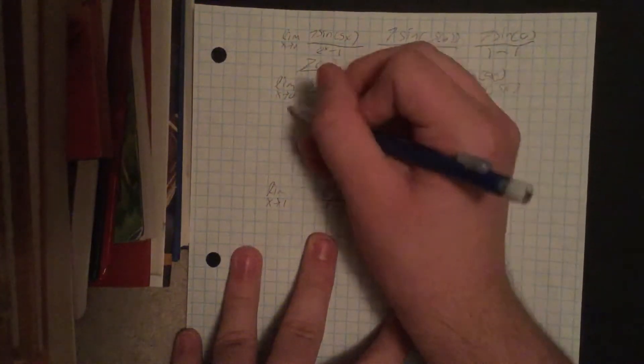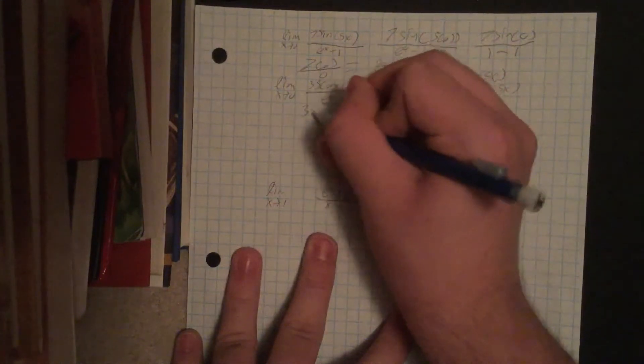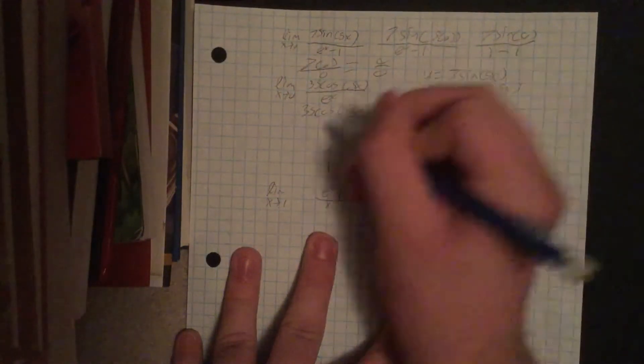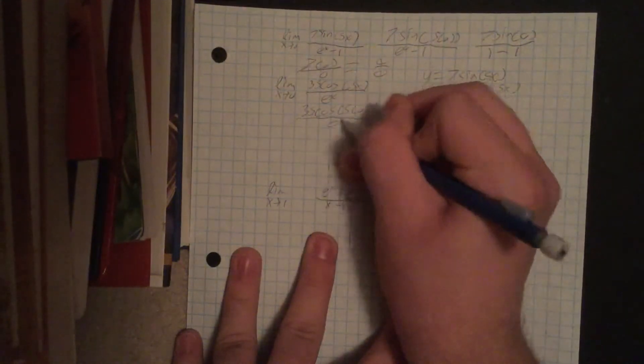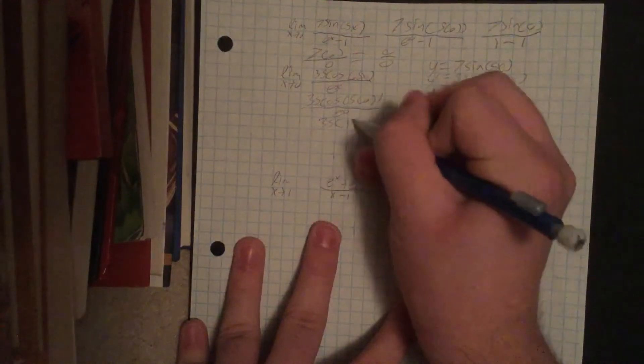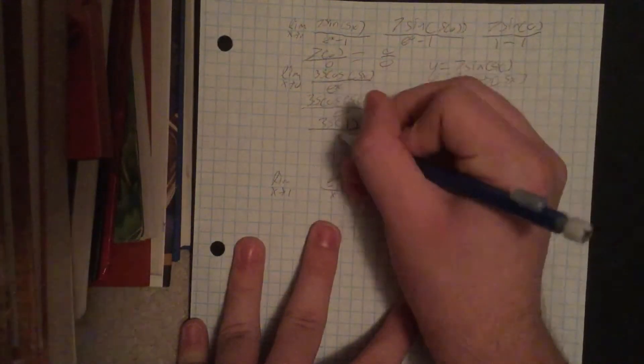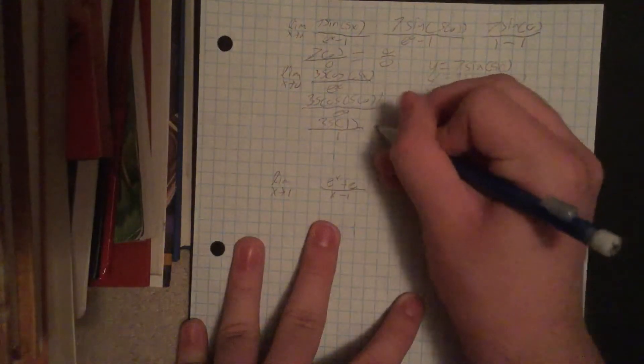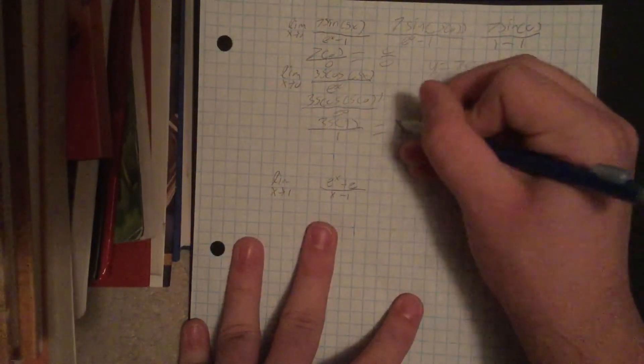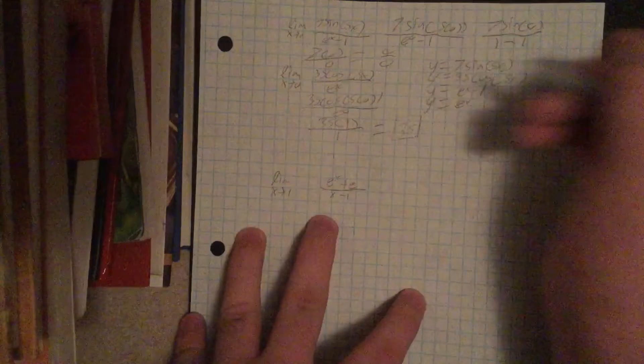And we'll get, once we plug that in, we'll get 35 cosine of 5 times 0 over e to the 0, which will get us 35 times 1 over 1, which will equal 35 over 1, which is just 35. So that's going to be our limit for our first problem.